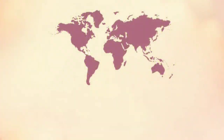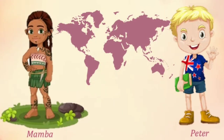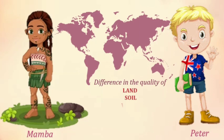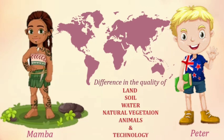Both Mamba and Peter stay in two different parts of the world and lead very different lives. This difference is because of the differences in the quality of land, soil, water, natural vegetation, animals and the usage of technology. The availability of such resources is the main reason places differ from each other.